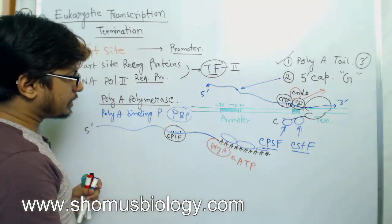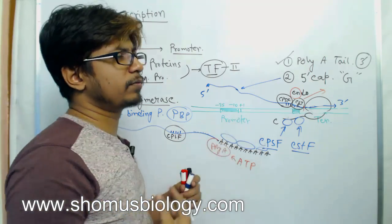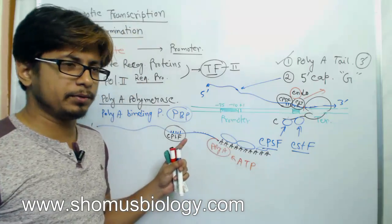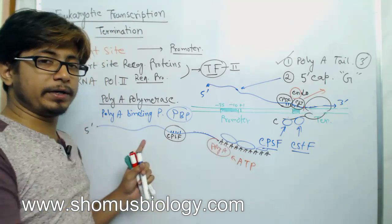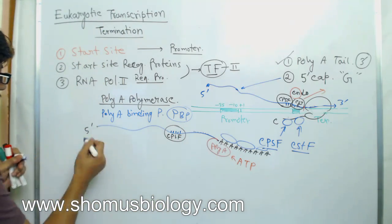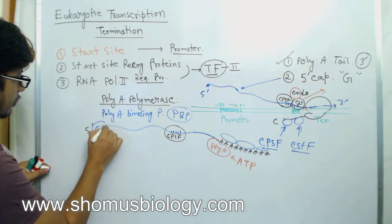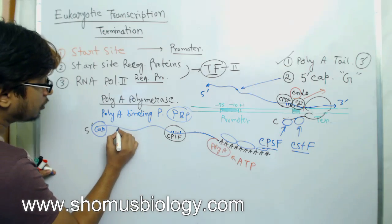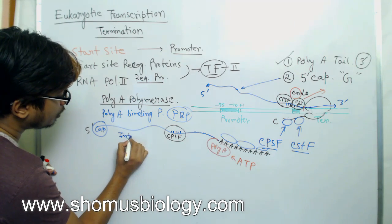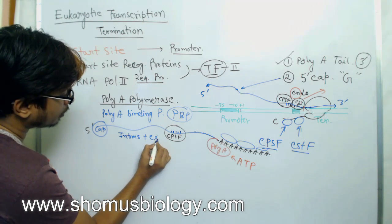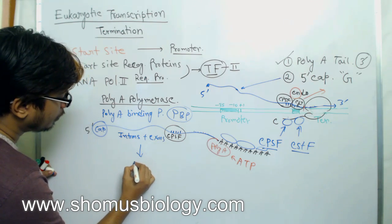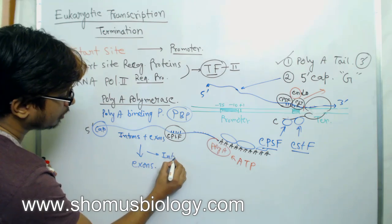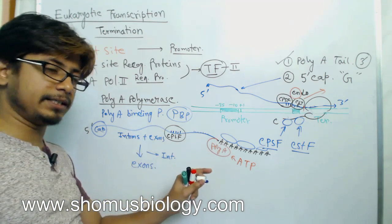Once a continuous stretch of 200 to 250 adenines is added, the process stops and the mRNA is now free. The five prime end is already capped, so the mRNA is essentially ready — although it still contains both introns and exons. Afterwards, introns need to be removed by splicing and exons joined together, but this marks the end of the transcription process itself.